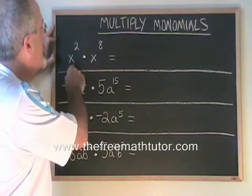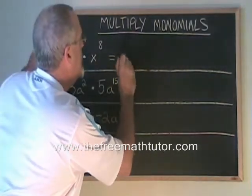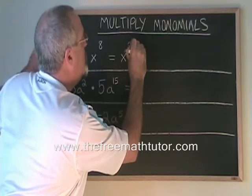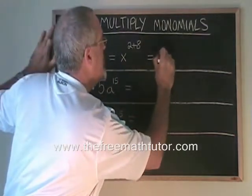When we multiply x squared times x to the 8, we will get x to the 2 plus 8, which is equal to x to the 10.